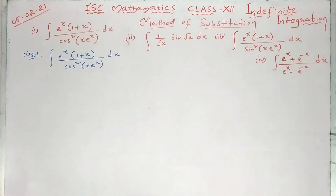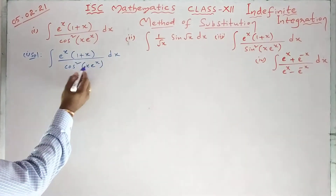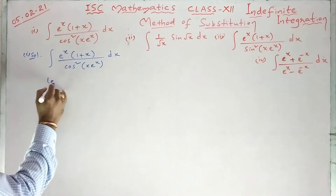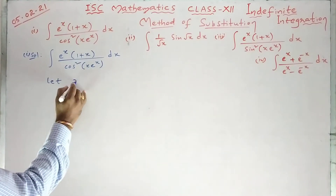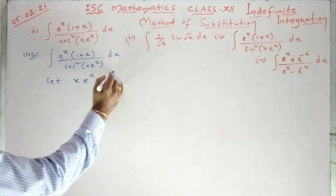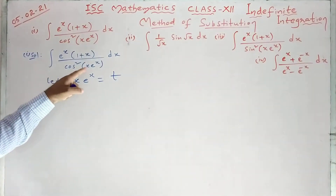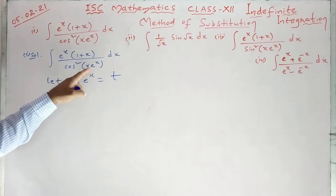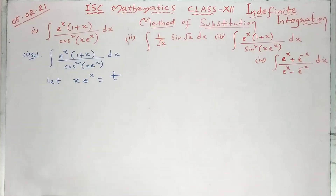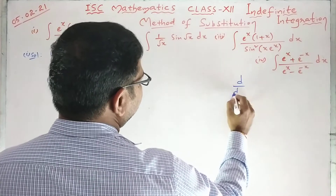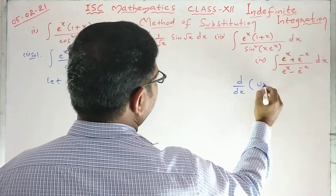Now, here particularly, we have cos squared of (x e^x). So let me take x e^x equal to t. Since we have the internal function x e^x, let it be t. Before writing the derivative, we have the product rule.